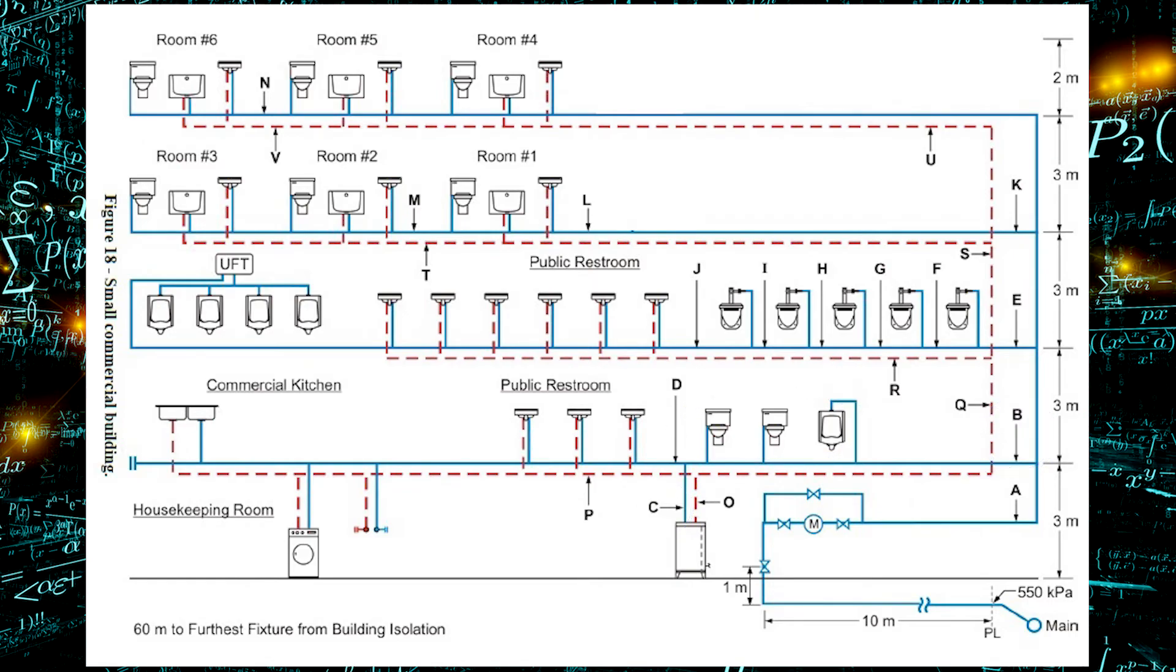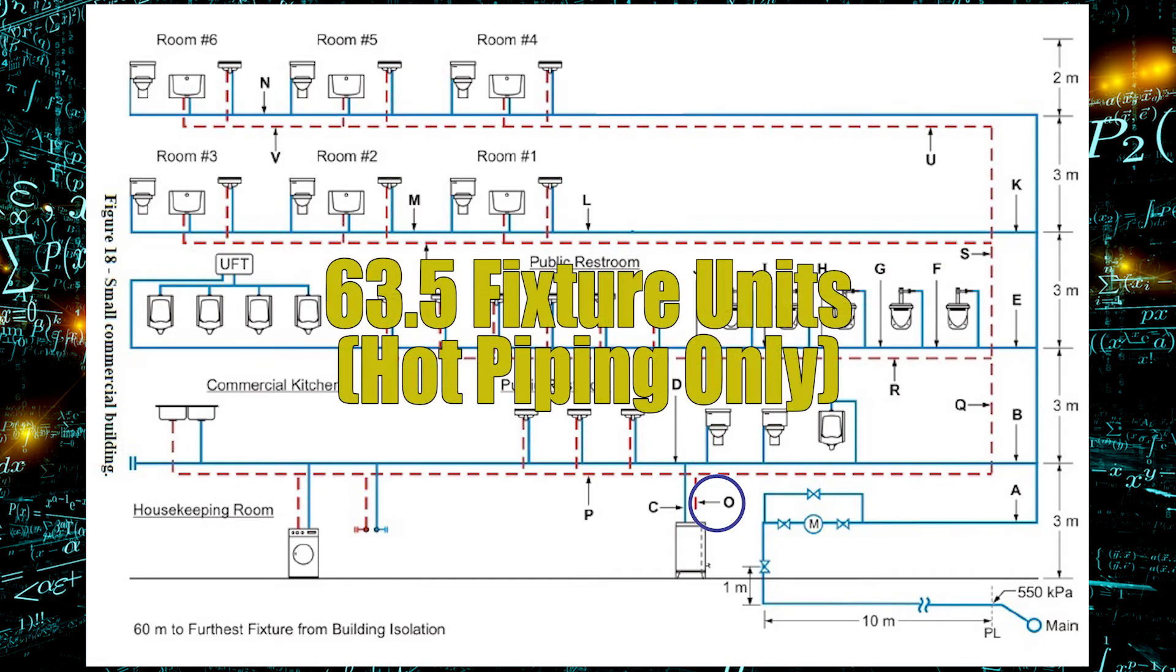As discussed in a previous video, pipe O is the hot water pipe that comes out of the hot water tank and provides hot water to the whole building with 63.5 fixture units. That means pipe C, the water supply to the hot water tank, has the same amount of fixture units going to it.